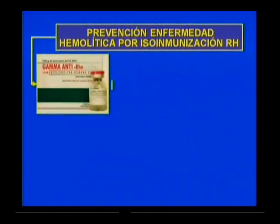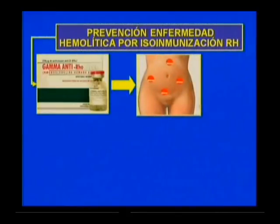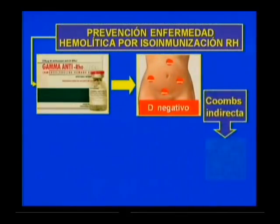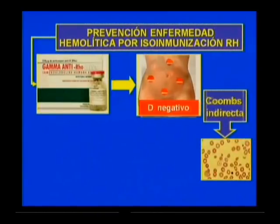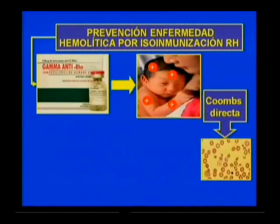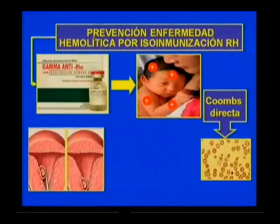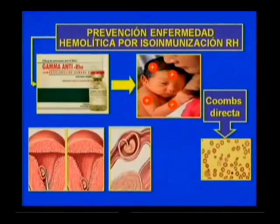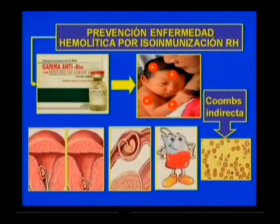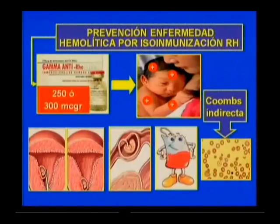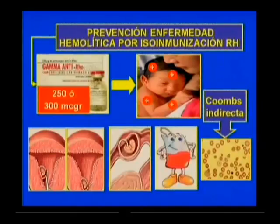Para la prevención de la enfermedad se administra la inmunoglobulina anti-D a toda mujer RH negativo, variedad D negativo y prueba de Coombs indirecta negativa, que haya tenido un hijo RH positivo con prueba de Coombs directa negativa, un aborto espontáneo o provocado, un embarazo tubárico, o una exposición a sangre no homóloga. Se administra un bulbo de 250 a 300 microgramos por vía intramuscular, y se recomienda repetir la prueba de Coombs indirecta a los 6 meses para comprobar su eficacia.